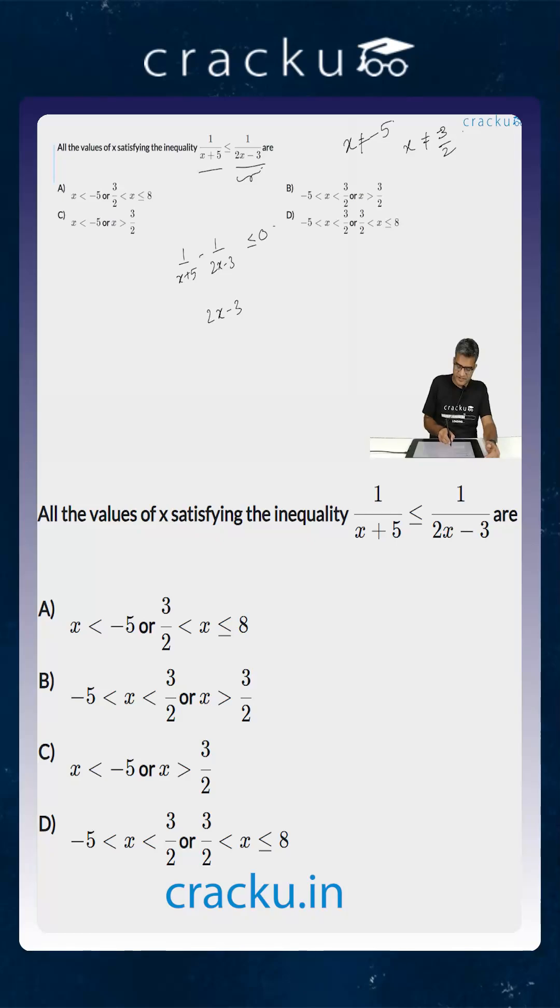This would imply that (2x-3 - (x+5))/[(x+5)(2x-3)] ≤ 0.